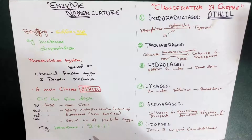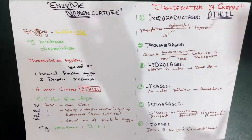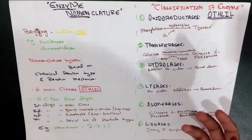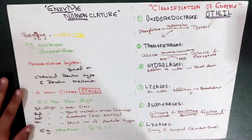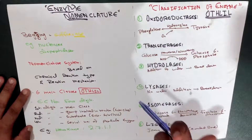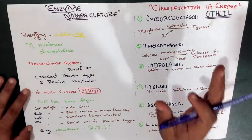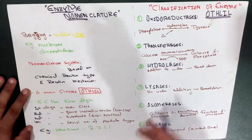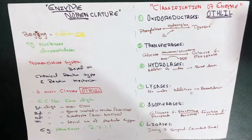Regarding hexokinase, its EC number is 2.7.1.1 — teachers mostly ask about these numbers in exams so you have to remember them. The real IUB name of hexokinase is ATP:D-hexose 6-phosphotransferase. That is the official name of hexokinase.